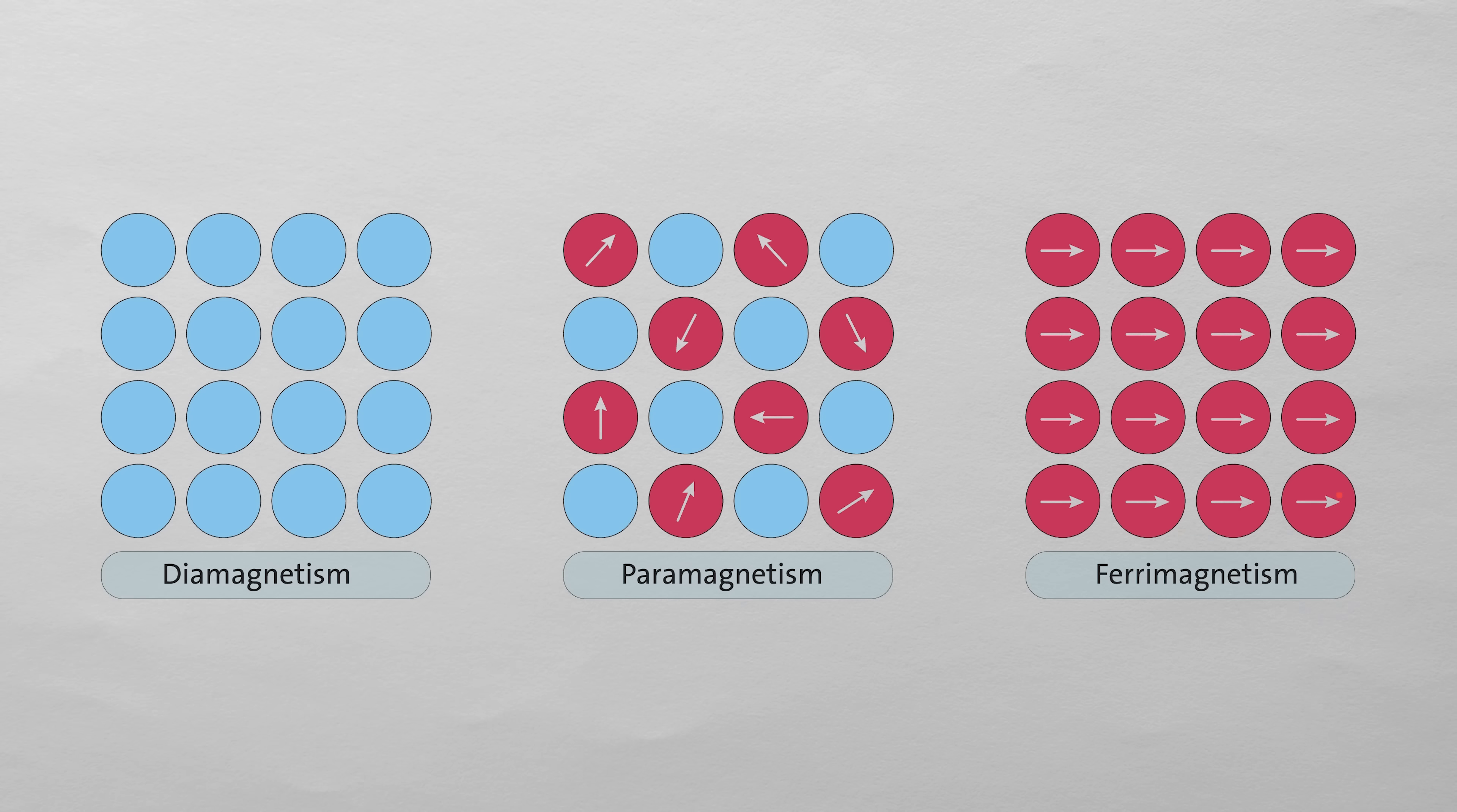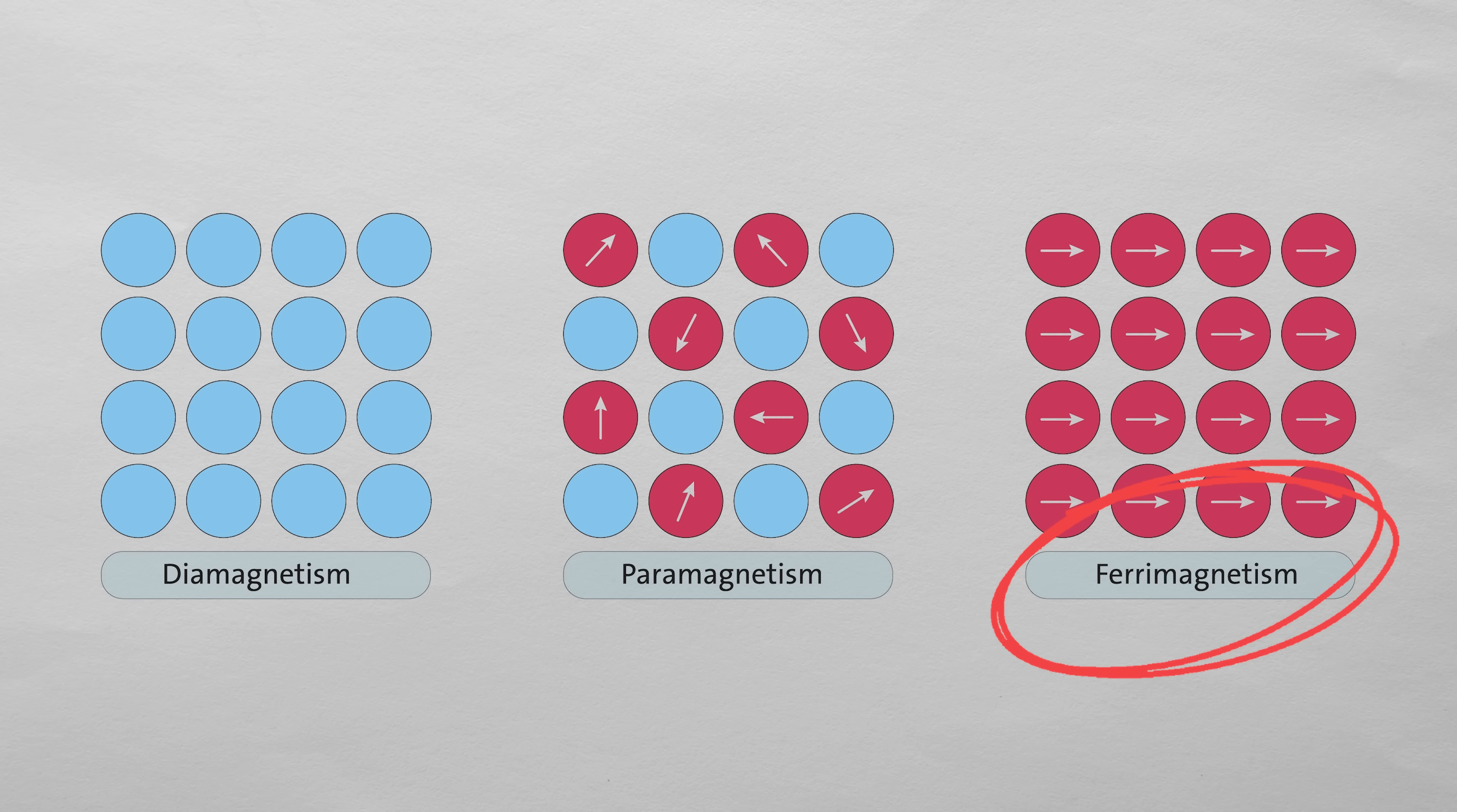Some paramagnets can go a step further. They can keep their magnetic moments aligned even when the external field is removed. These are called ferromagnets, which are the everyday magnets you're familiar with. So here's the question.